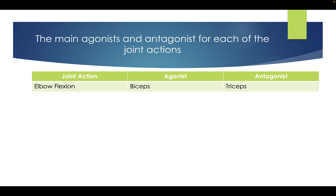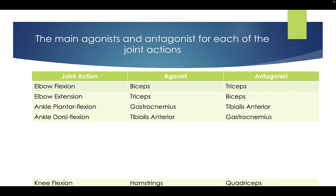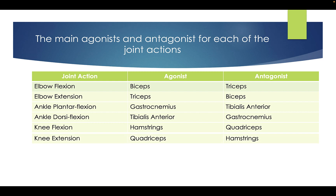The main agonist and antagonist for each joint action: elbow flexion — bicep and tricep; elbow extension — tricep and bicep. Ankle plantar flexion — gastrocnemius and tibialis anterior; ankle dorsiflexion — tibialis anterior and gastrocnemius. Knee flexion — hamstrings and quadriceps; knee extension — they flip over.